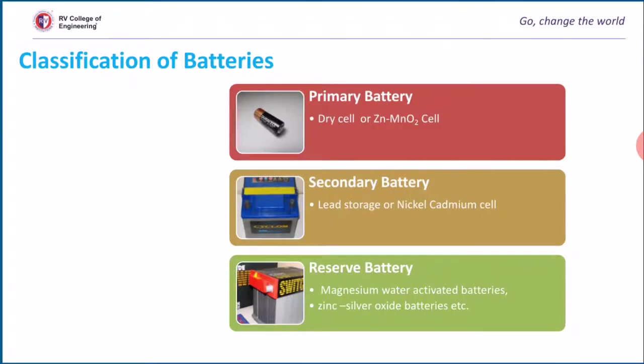These batteries are classified into primary, secondary and reserve batteries. Primary batteries are those in which cell reactions are not reversible. Once electroactive materials are converted to electro-inactive materials, they can't be reused and must be discarded.